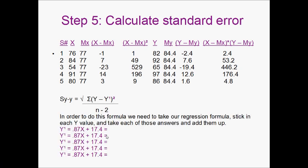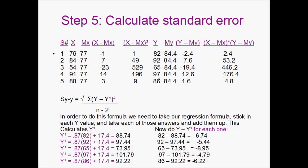So the first step we're going to do is we're going to plug in each of these Y values that you see here into our regression equation. As you can see, we have 82, 92, 65, 97, 86. We're going to plug each of these numbers into our equation, and we're going to get an answer. Then from there, we're going to subtract these numbers from each of the Y values.